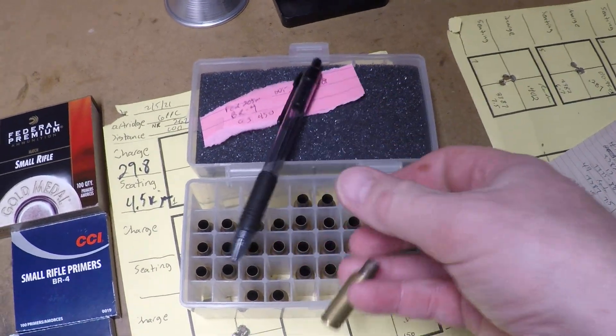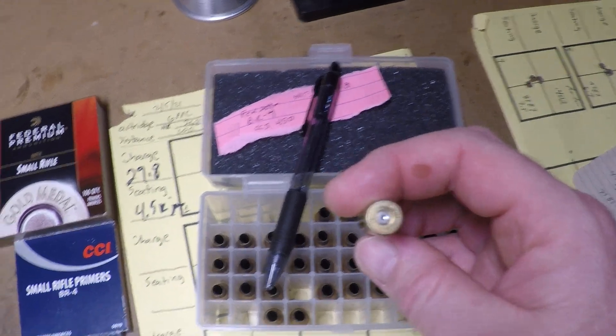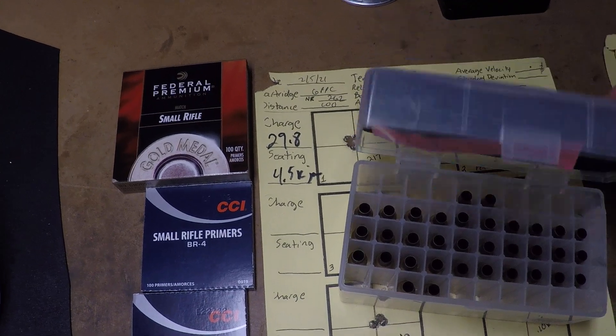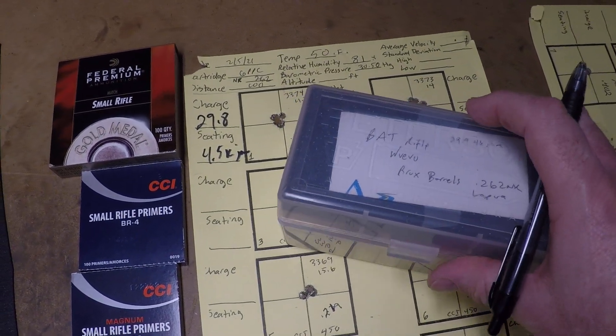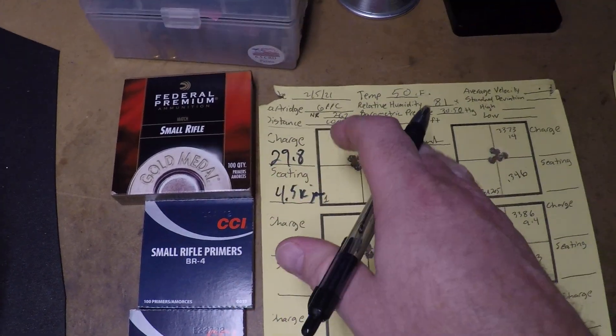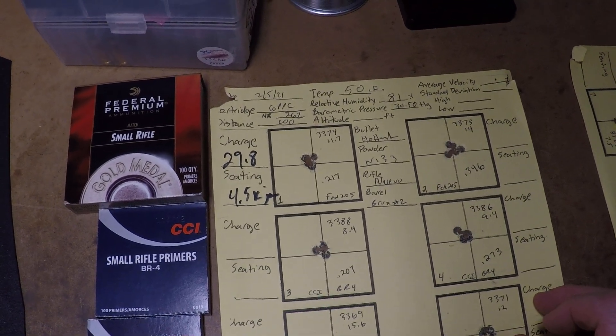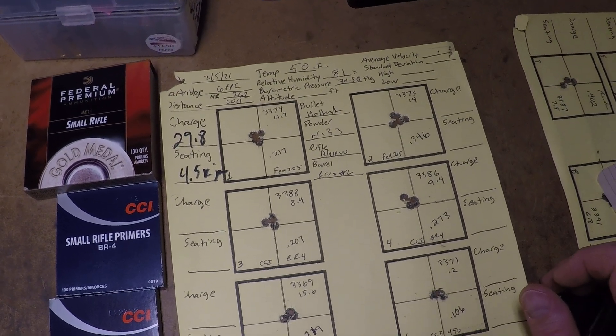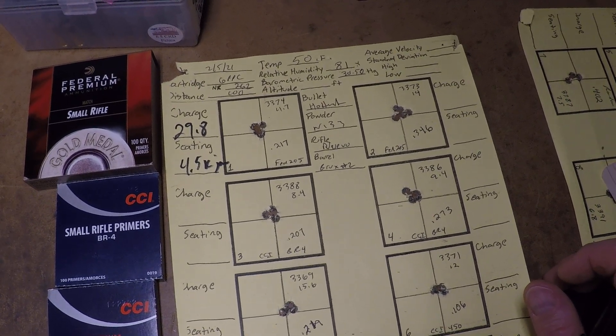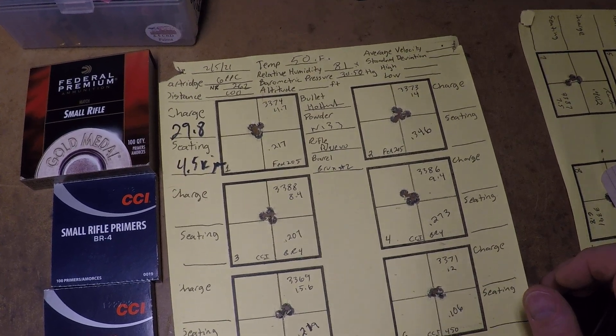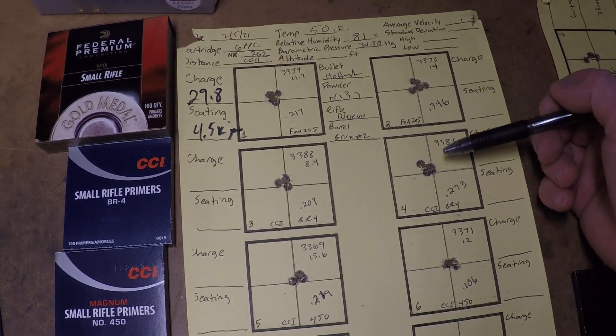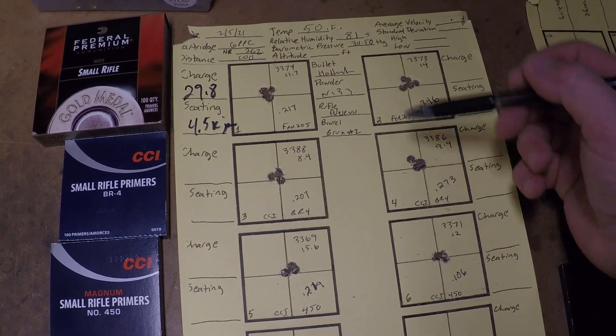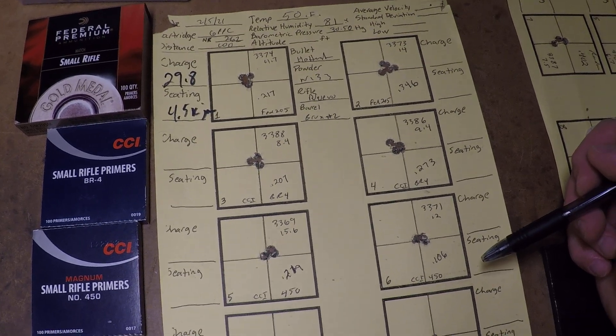In my conclusion, it's probably safe to say that at least with these three different primers, and with a 6 PPC case and a load of what may be a moderate to somewhat on the hot side load for you, there may not be a huge difference in the pressure or velocity by switching up primers. There may actually be group size difference with some primers maybe showing better grouping here.